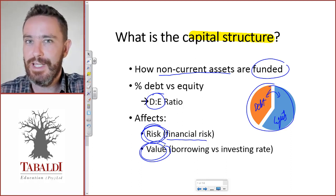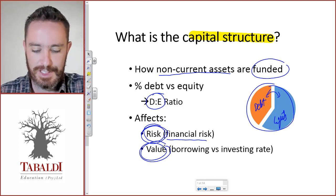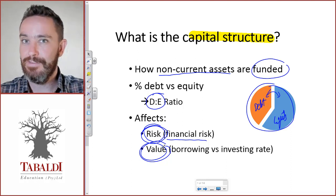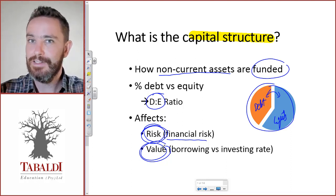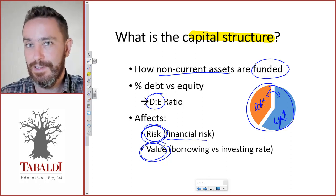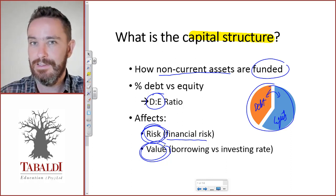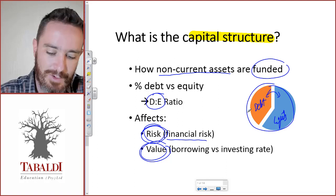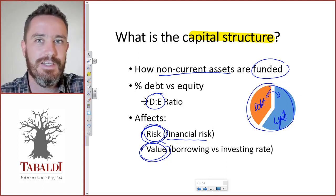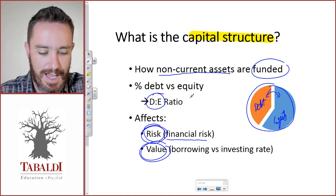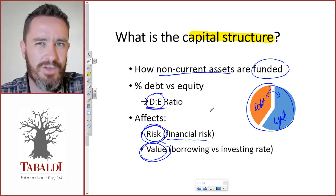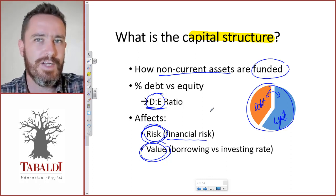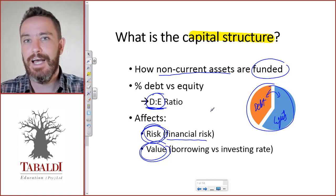It also affects the value of the company. We'll cover how that works separately in capital budgeting, but for now you must just be aware: the main aim of the financial manager is to maximize shareholder value. We increase value by earning higher returns and spending less — specifically, by lowering the overall cost of funding the business. Note that there are other forms of finance like preference shares that could be classified as either debt or equity; we can ignore that for now and just focus on debt and equity.